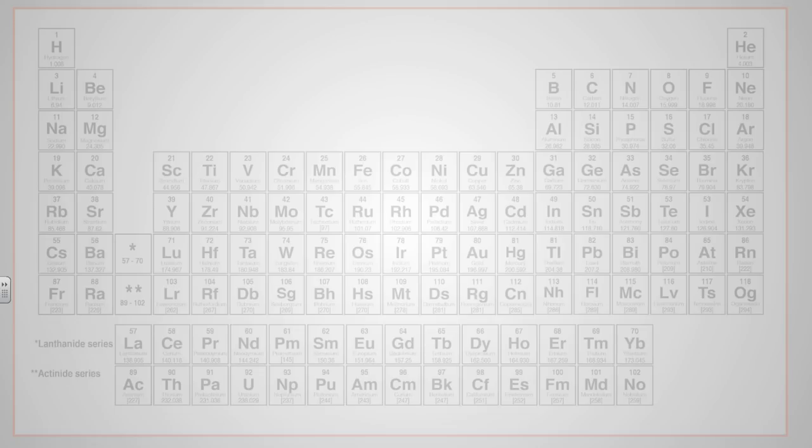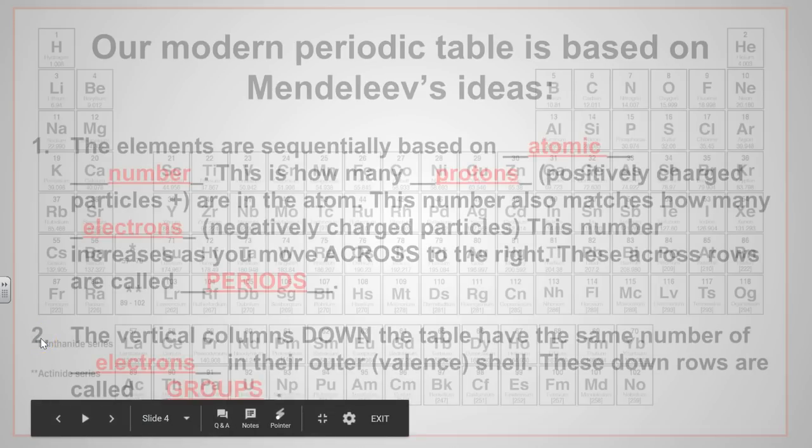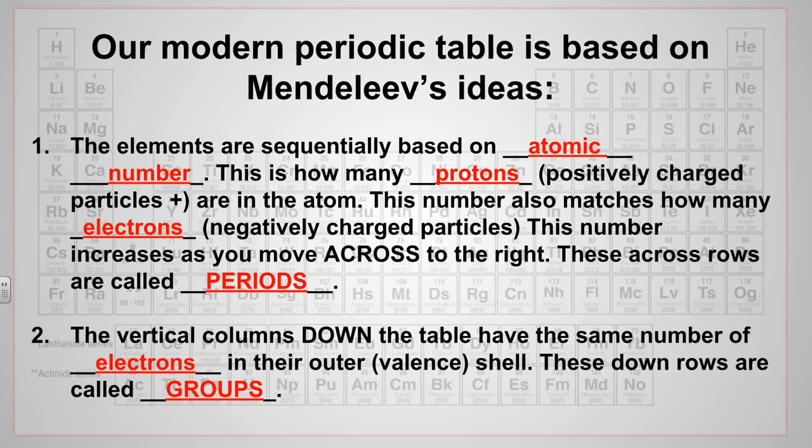All right, so let's talk about what we just saw in debrief. Our modern periodic table, again, is based on Mendeleev's ideas. The elements are all sequentially based by atomic number. Remember, the periodic table goes one, two, three, four, five. That's the atomic number that you see. This atomic number is how many protons, which are positively charged particles, are in the atom. By the way, this number also matches how many electrons, remember, negatively charged particles. This number increases as you move across the periodic table to the right.